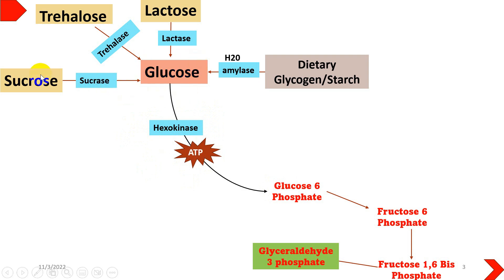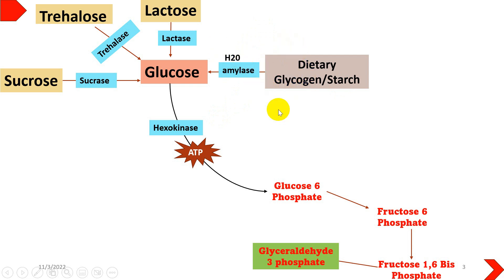The sources of glucose can come from sucrose — the sucrase enzyme will act on it and glucose will be formed. Similarly, trehalase will act on trehalose to form glucose, and lactase will act on lactose to yield glucose. If glucose comes from a dietary source of glycogen or starch, it will be broken down by the amylase enzyme through hydrolysis, releasing glucose molecules for use in glycolysis.